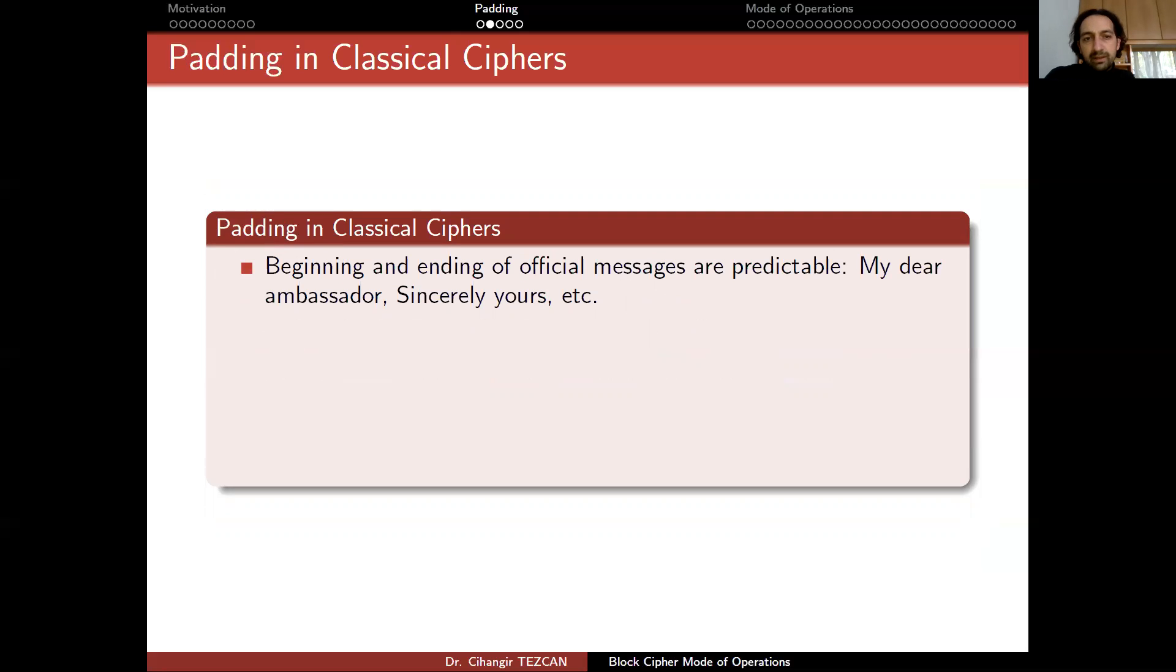So think about the classical ciphers where we were simply using pen and paper methods and we are just sending letters. So beginning and ending of official messages are predictable because they start like my dear ambassador or ends with sincerely yours, etc. So the attacker can always guess the beginning or at the end of the message. And if they capture the ciphertext, now they have the ciphertext and beginning or end of the message. So by looking at the relations from these parts, they may decrypt the whole message.